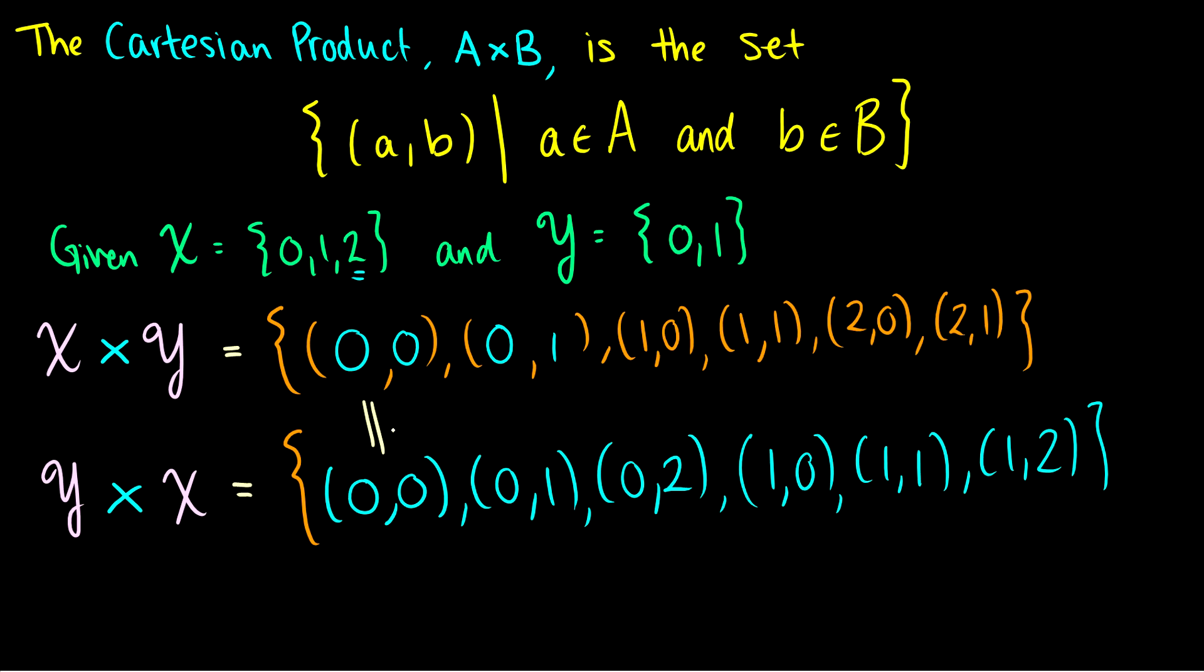(0,0) is a flip of (0,0). (0,1) is a flip of (1,0). (0,2) is a flip of (2,0). Our (1,0)s cross our (1,1), and our (2,1) cross. So of course, this makes sense because X cross Y means first from X, second from Y. Well, Y cross X would mean first from Y and second from X. So of course, these would be flipped.